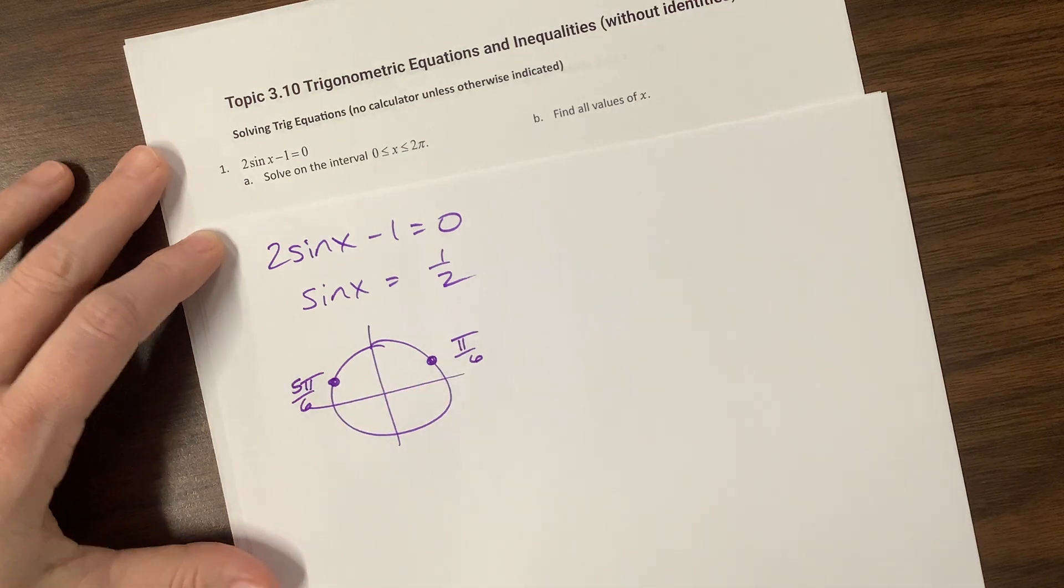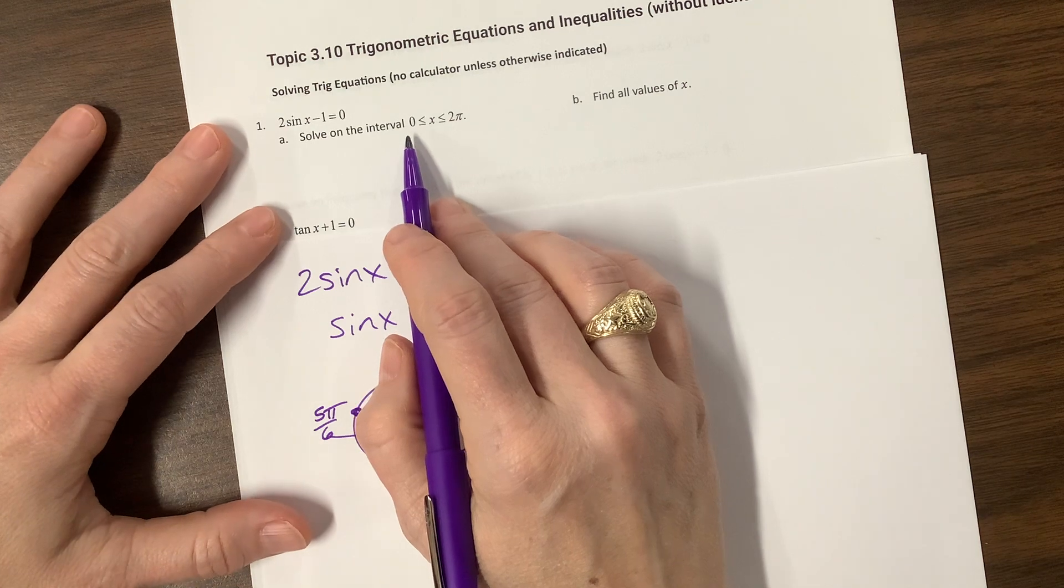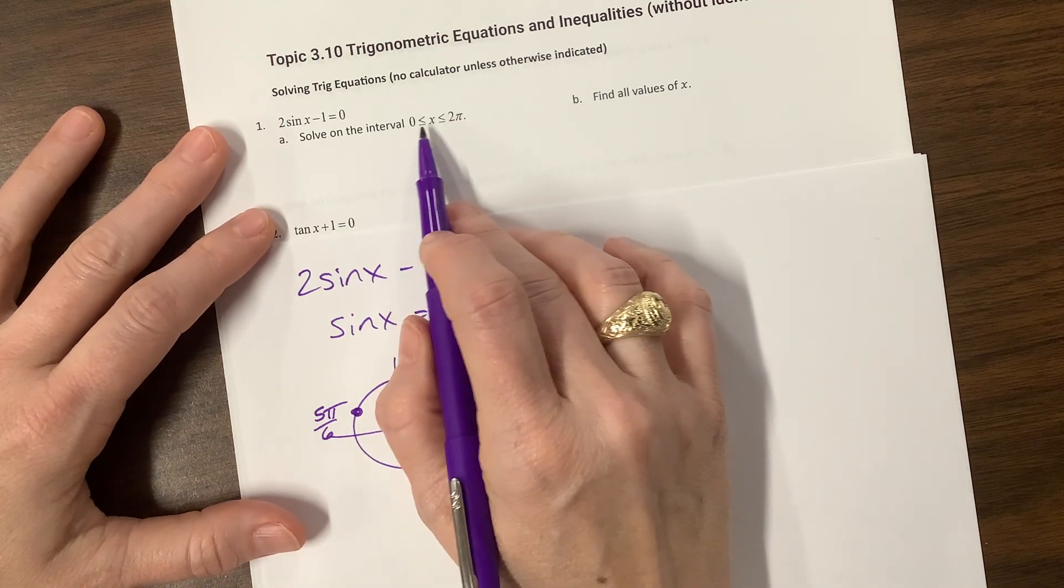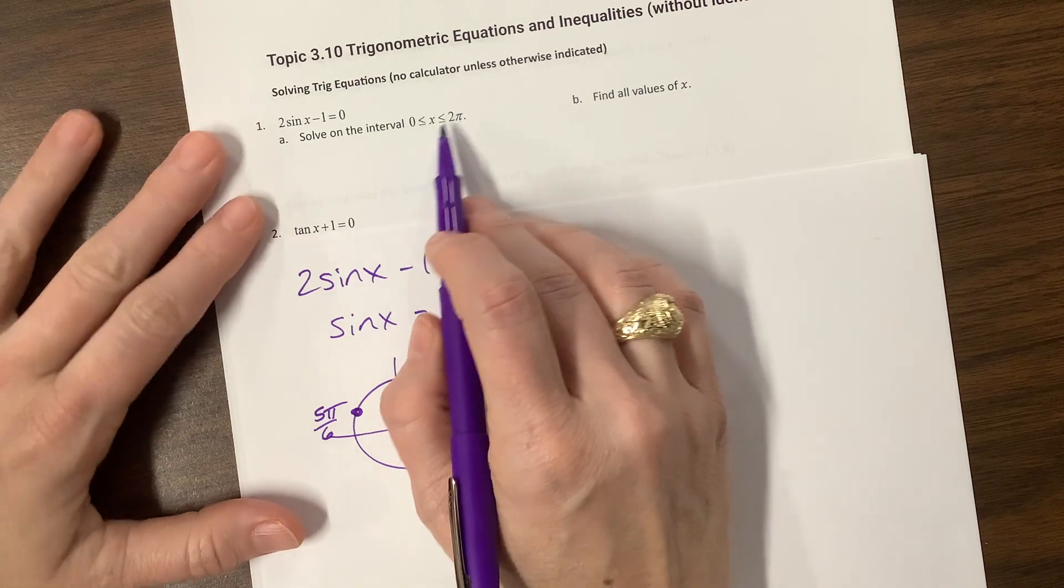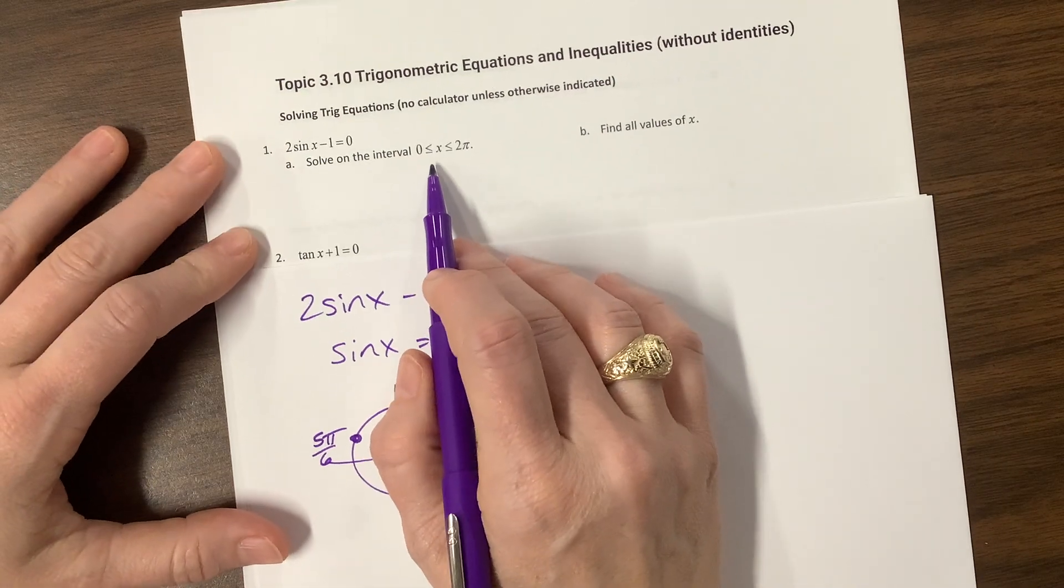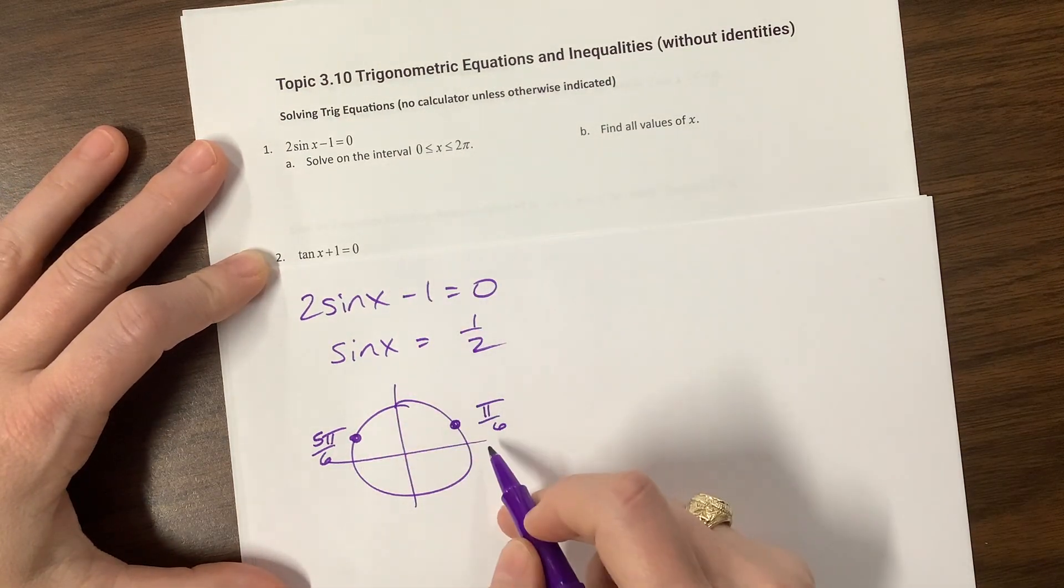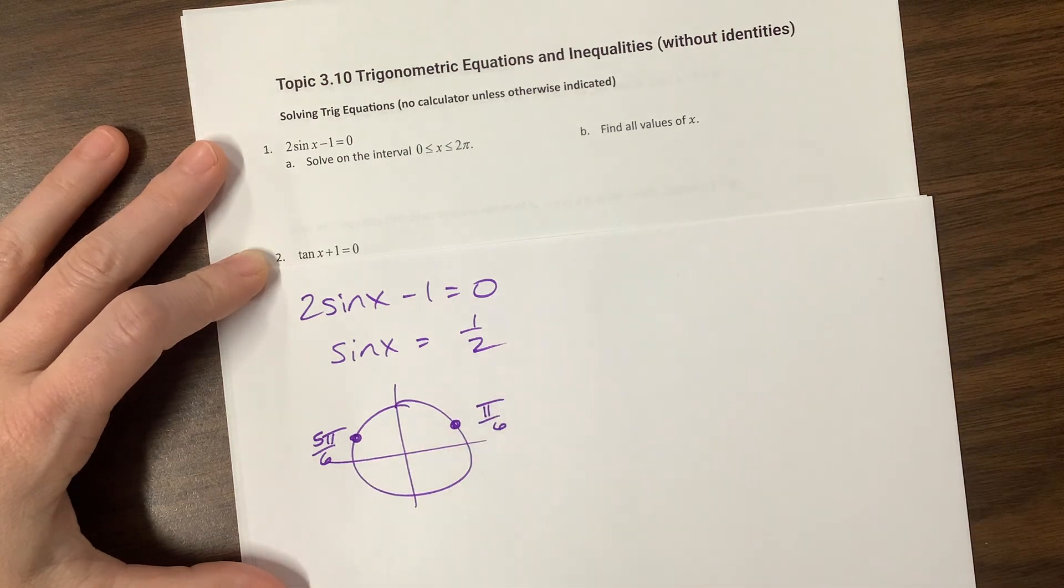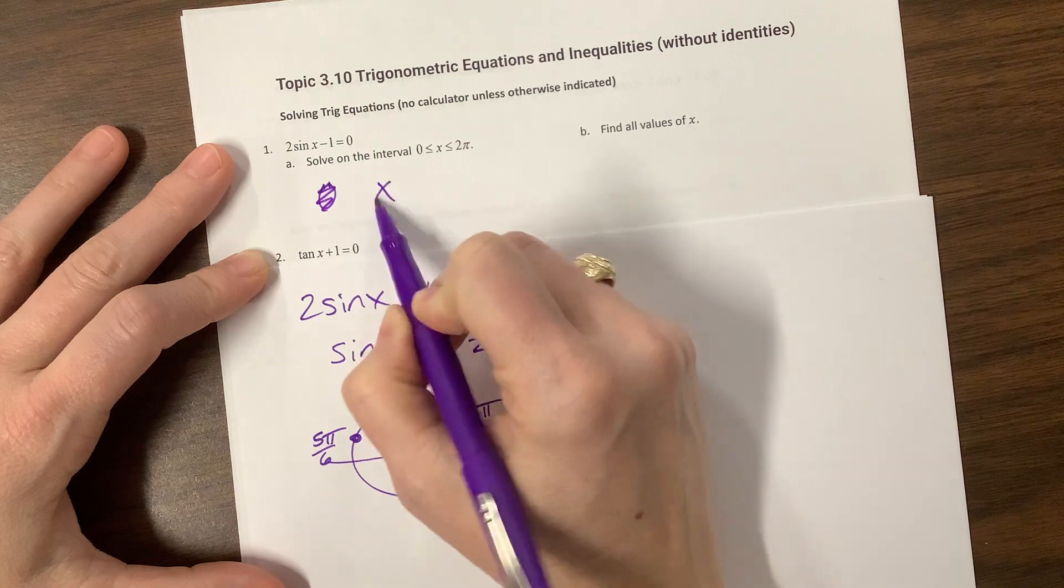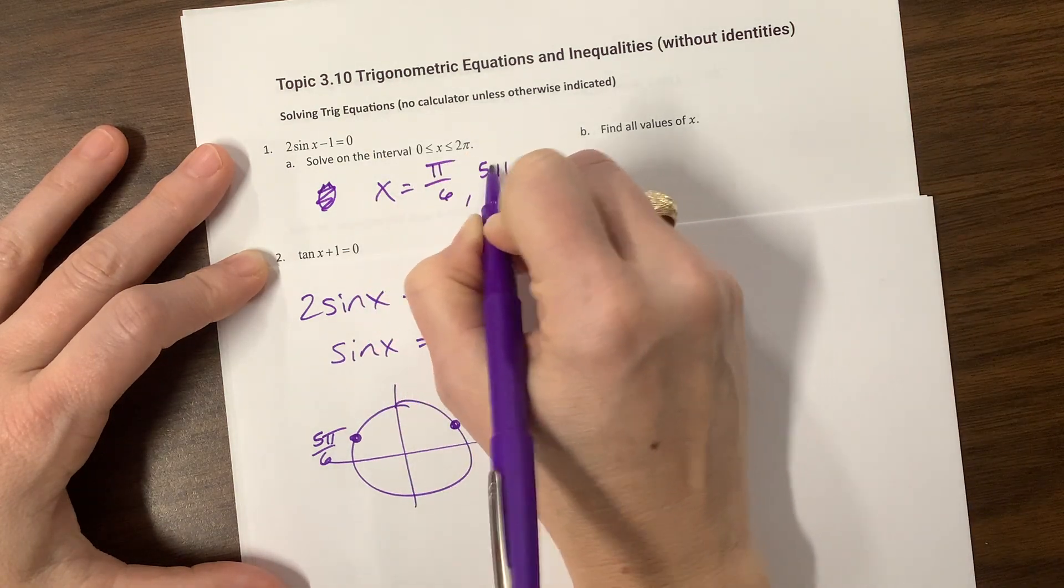Then when they say, they'll ask the question two different ways. They'll say solve it on the interval. It might be the interval 0 to 2π, it might be a different interval. They could change this to whatever they want, but in our world, basically they're saying you've got one pass around the unit circle. Give us our answers and move on. So x would equal π/6 or 5π/6, and there we go.